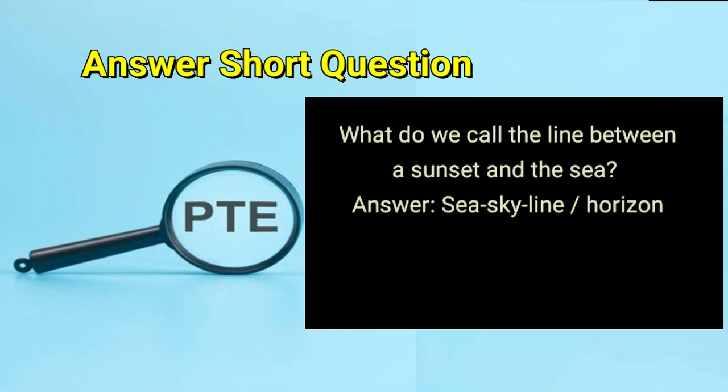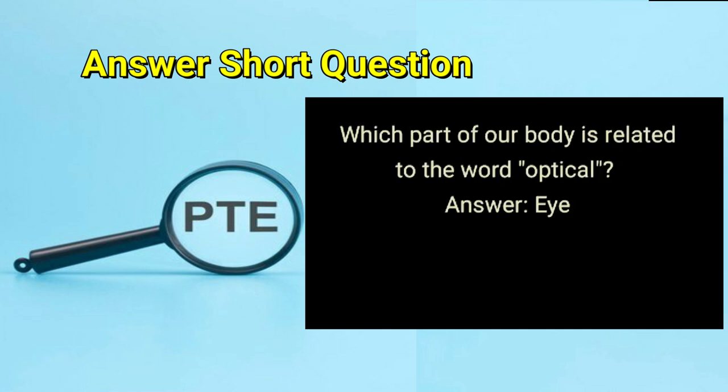What do we call the line between a sunset and the sea? Answer: sea skyline. Which part of our body is related to the word optical? Answer: eye.